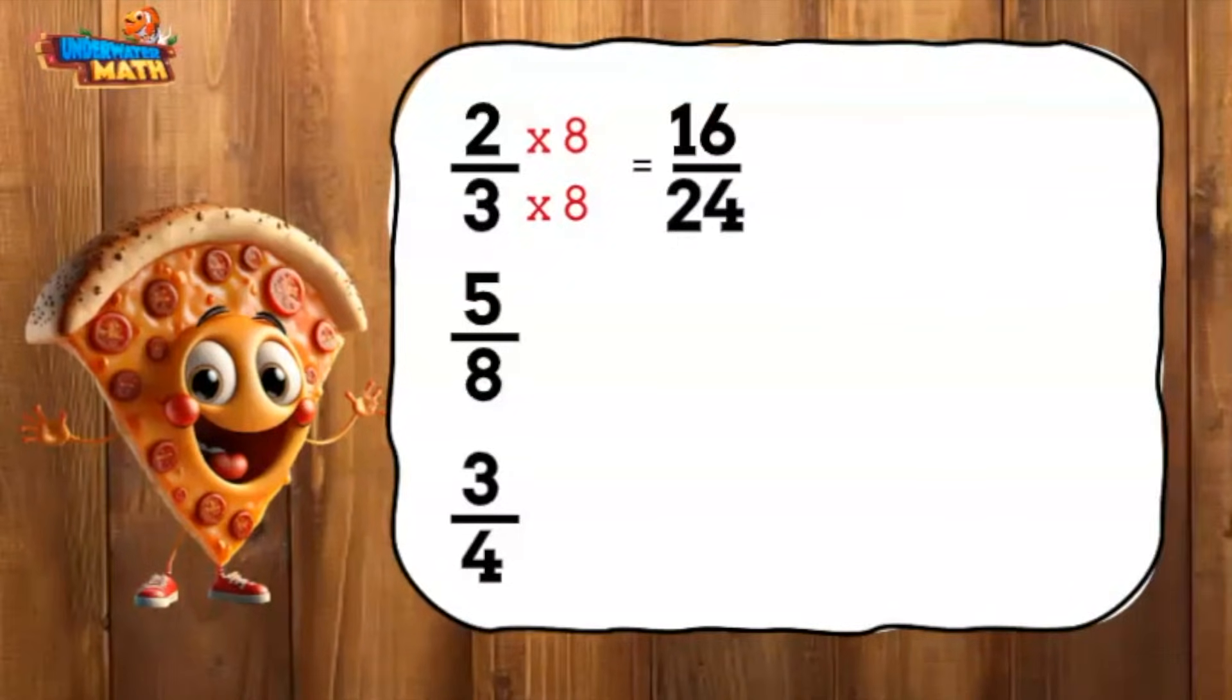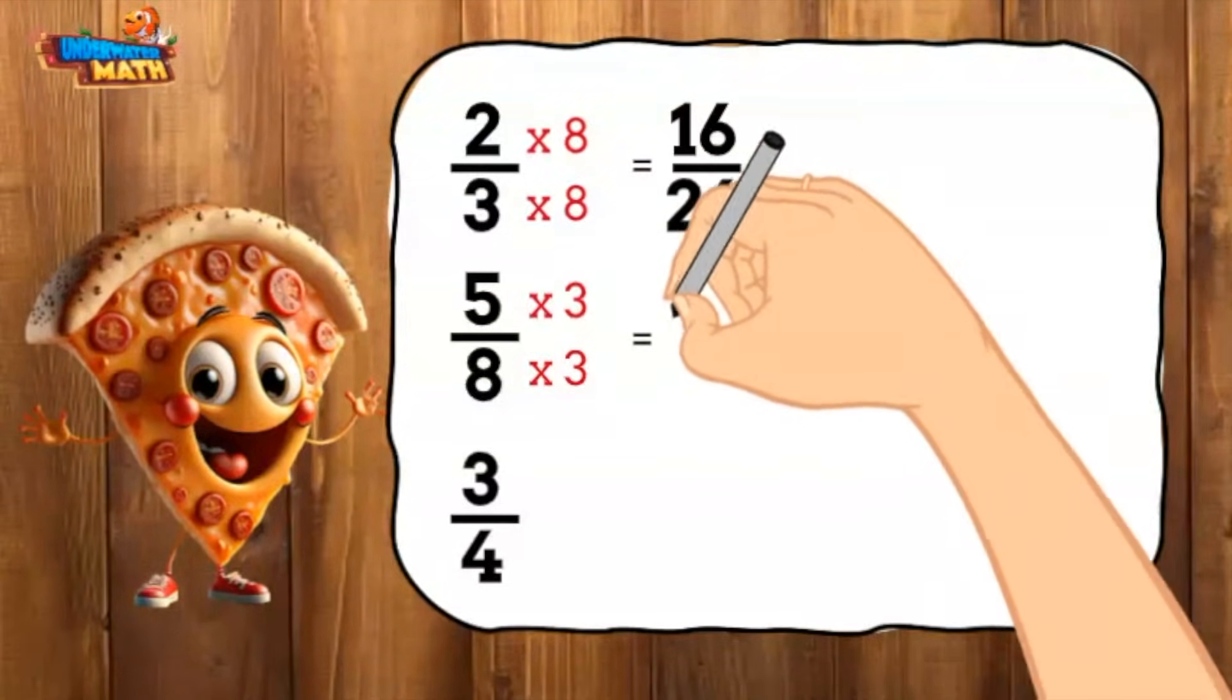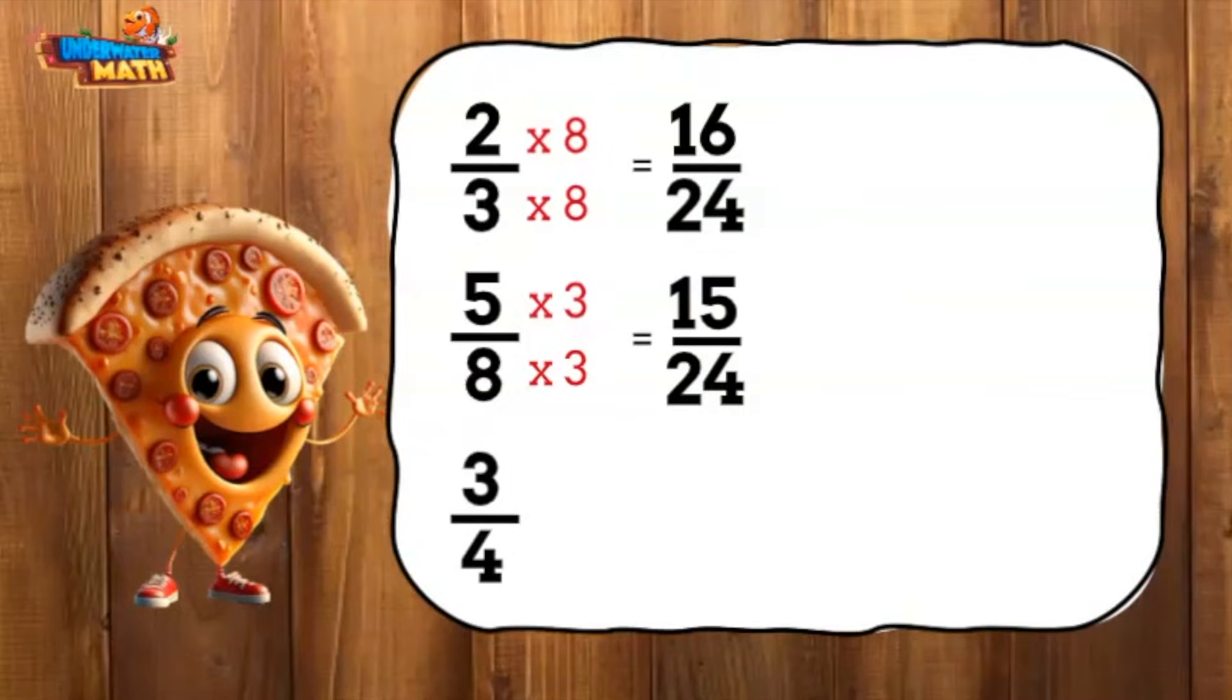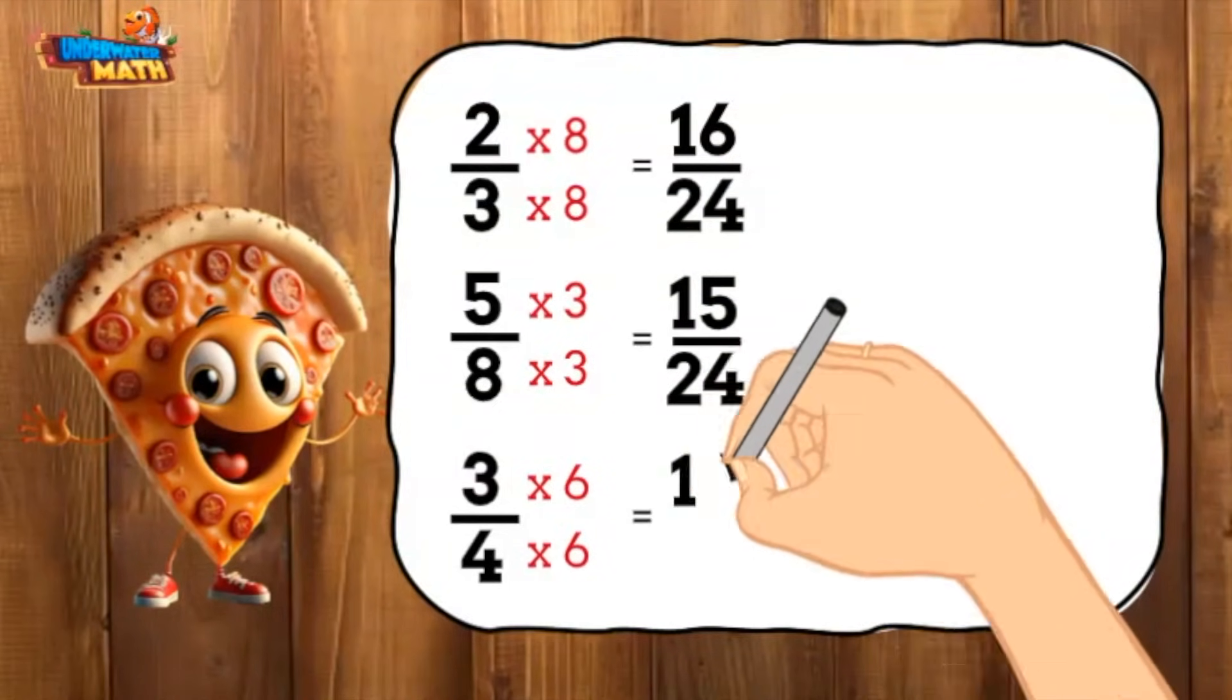Two-thirds becomes 16 twenty-fourths, five-eighths becomes 15 twenty-fourths, and three-fourths becomes 18 twenty-fourths.